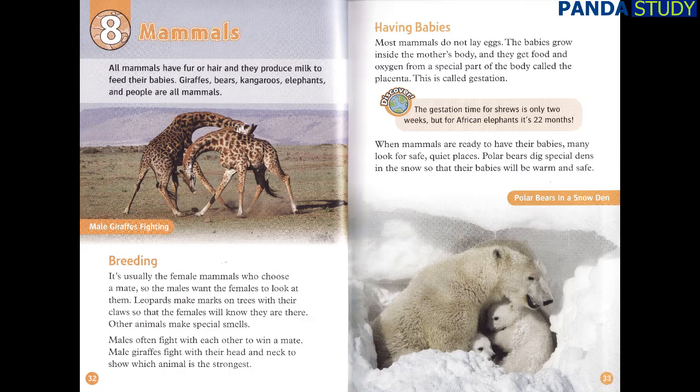The gestation time for shrews is only two weeks, but for African elephants it's 22 months. When mammals are ready to have their babies, many look for safe, quiet places. Polar bears dig special dens in the snow so that their babies will be warm and safe.